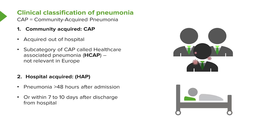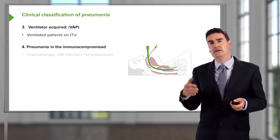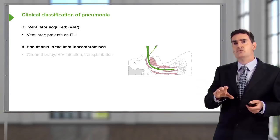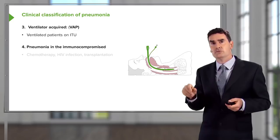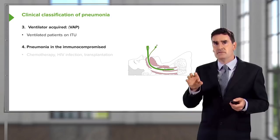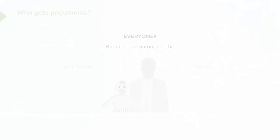A third form is ventilator-acquired pneumonia, a subtype of hospital-acquired pneumonia occurring in ICU patients being ventilated with an endotracheal tube. The ET tube bypasses many normal immune mechanisms for preventing infection. The final category is immunocompromised host pneumonia — patients with severe immune defects such as those on chemotherapy, HIV with poor CD4 counts, or those who have had bone marrow, kidney, or lung transplantation — who are susceptible to unusual bacterial, viral, and fungal organisms.